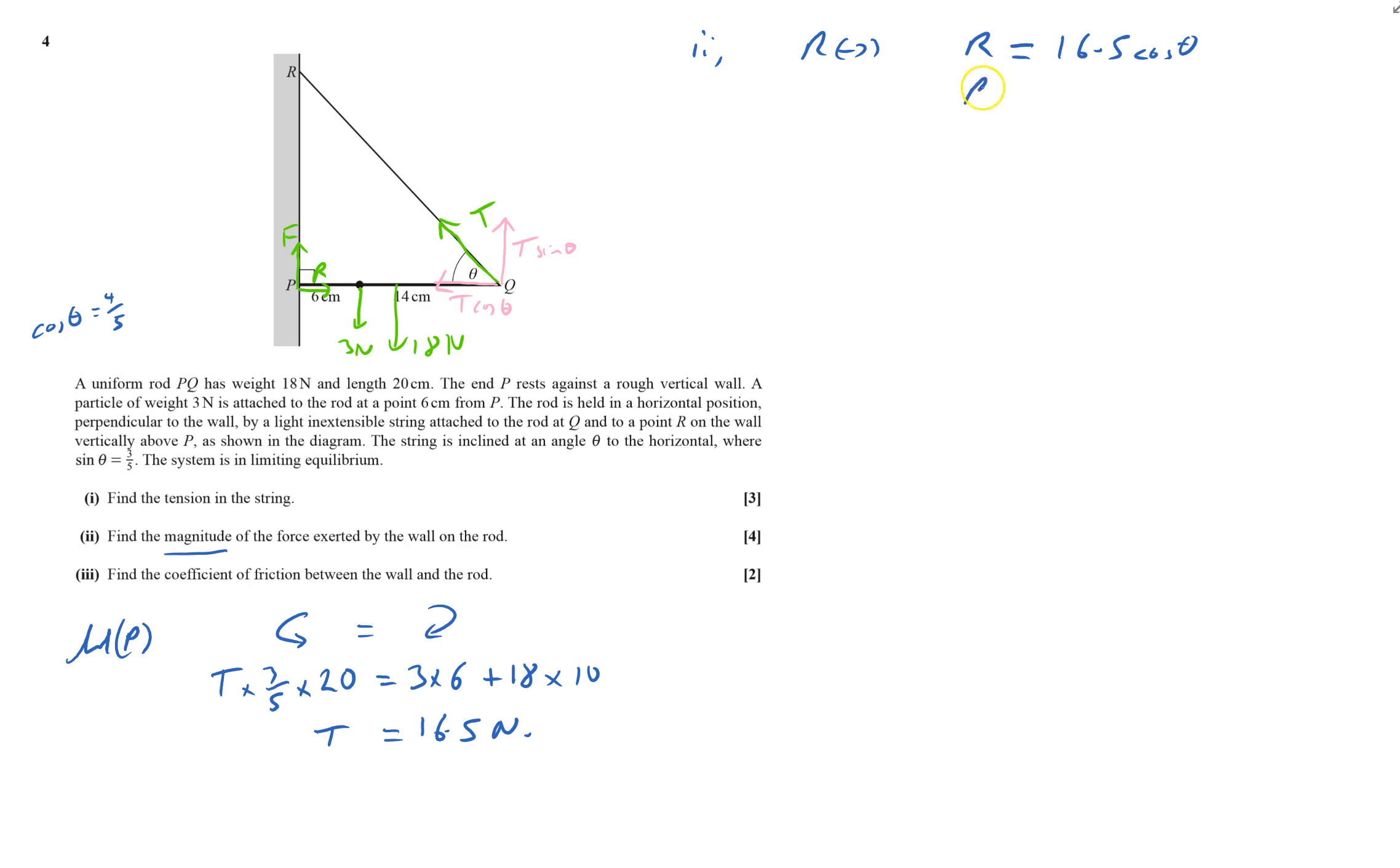R will equal 16.5 times by cos theta, which is four-fifths, and that equals 13.2 newtons.